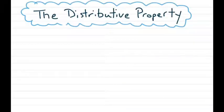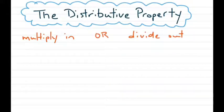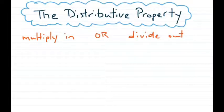Last but not least, we have the distributive property, and this one's kind of in a league of its own — it's definitely one of the most complicated properties we talk about in 6th grade. Our ultimate goal is still to create two equivalent expressions, but the distributive property takes it one further. Instead of just adding and multiplying, you can either multiply something in or divide something out to get an equivalent expression.